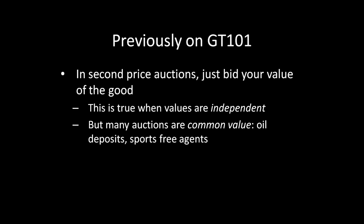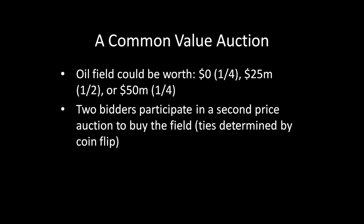Let's see why — this is going to be called the winner's curse. Here's a common value auction. We have an oil field that could be worth nothing at all — it's very expensive to extract the oil — it could be worth $25 million, or it could be worth $50 million. The $0 outcome occurs one-fourth of the time, the $25 million outcome one-half of the time, and the $50 million outcome one-fourth of the time. We're going to have two bidders participate in a second price auction to buy the field, with ties determined by a coin flip.